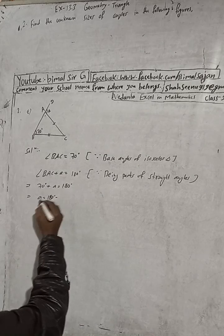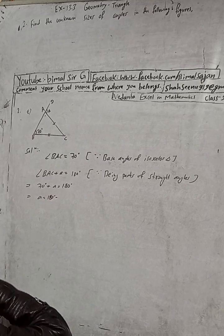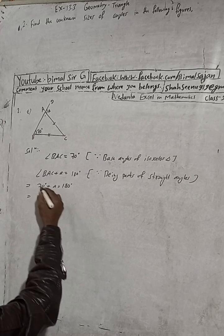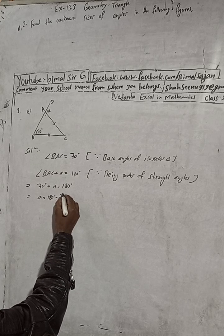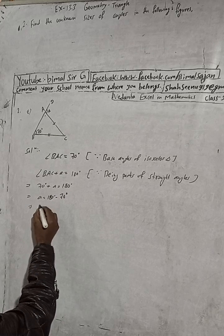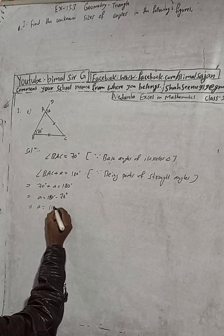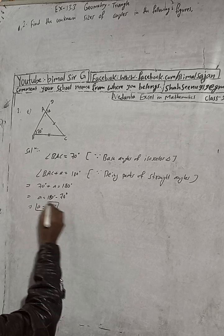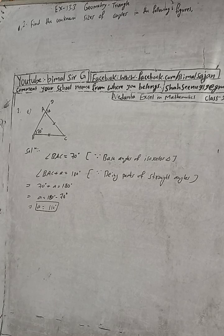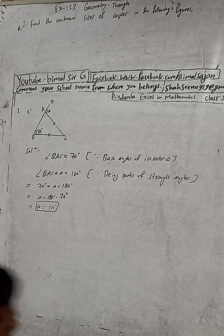Now this A is equal to 180 degrees minus 70 degrees. This implies A equals 180 minus 70 is 110 degrees. So A we got here, A equals 110 degrees. And the given answer is 110 degrees, so this is correct.